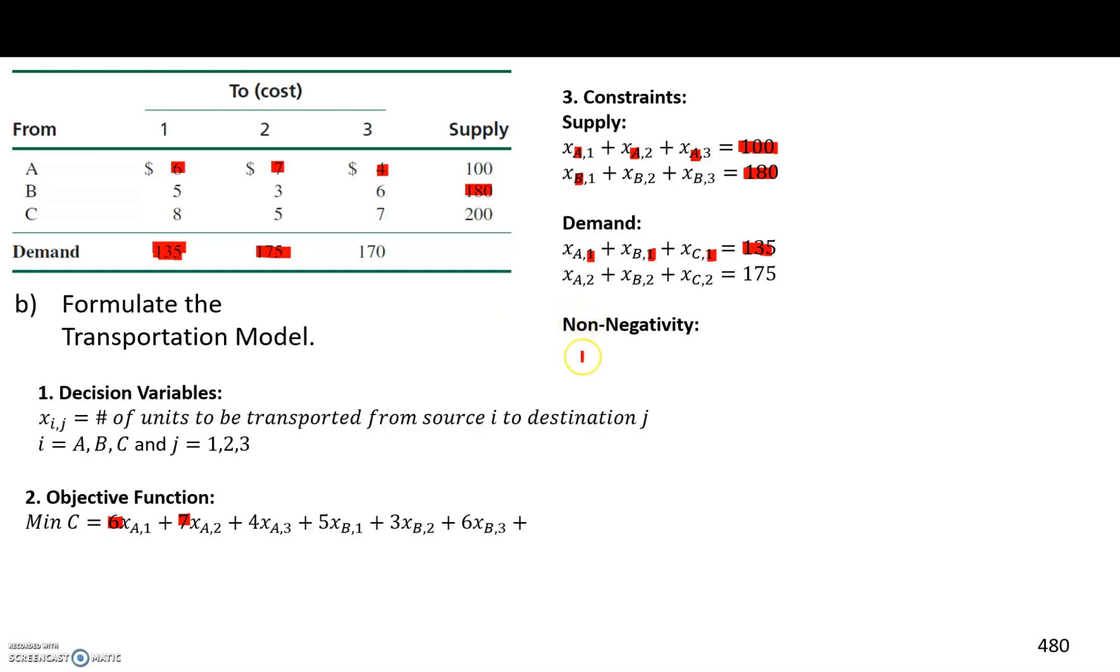And finally, we have our non-negativity constraints, which is always going to be XI,J greater than or equal to 0.